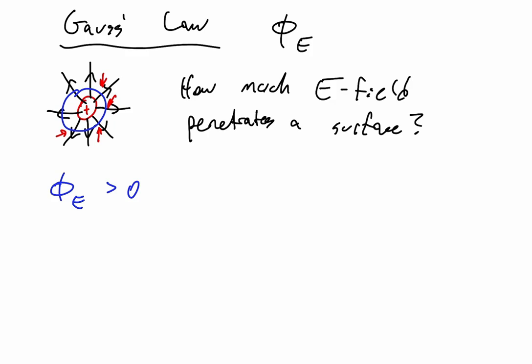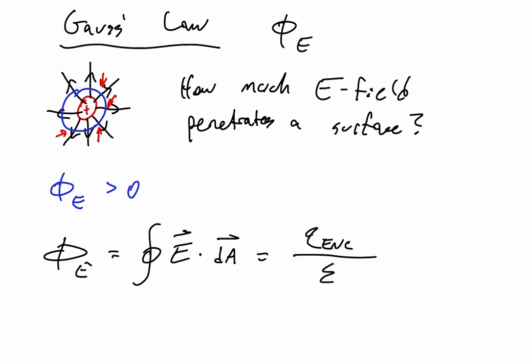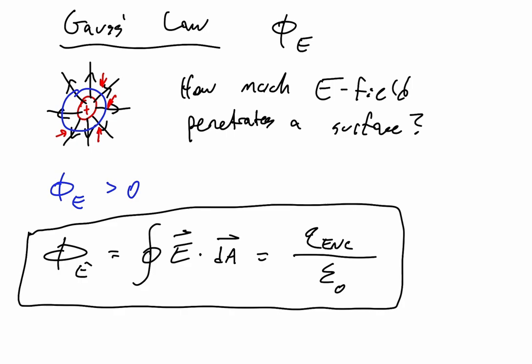Gauss's law is going to let us quantize this concept of electric flux. We can say that electric flux is equal to our closed loop integral — denoting this closed imaginary surface — of our electric field (a vector quantity) dotted with our dA vector, since we're only looking at the perpendicular components of our electric field. Our closed loop integral of E dot dA is going to be equal to our enclosed charge Q_enclosed divided by epsilon naught, which is a constant. This is our first of Maxwell's equations.